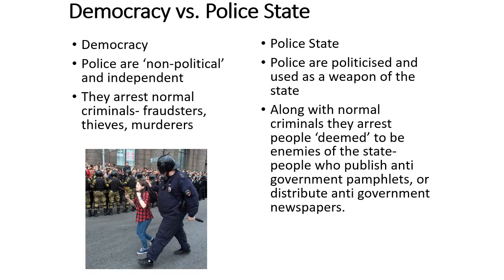So just to get some definitions first of all — a democracy versus a police state. In a democracy like we have, the police are technically non-political and independent. Their job is just to arrest normal criminals: fraudsters, thieves, murderers — they play no role in politics. But in a police state, police are politicized and they're used as a weapon of the state. So along with normal criminals, they arrest people deemed to be enemies of the state — people who publish anti-government pamphlets or distribute anti-government newspapers. Anyone who protested on the street against the government would be arrested. Anyone who produced a pamphlet that criticized Hitler would be arrested. Anyone who tried to publish negative stories about the Nazis would be arrested. Just pause the video and note down democracy versus police state and get this information down in your book.